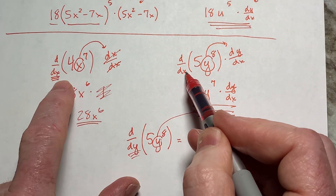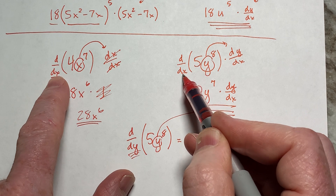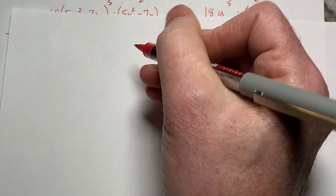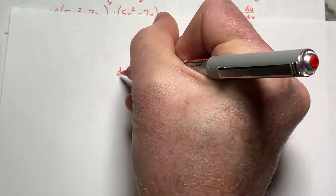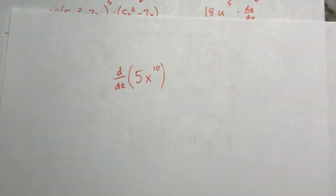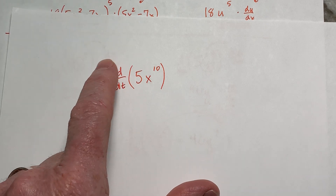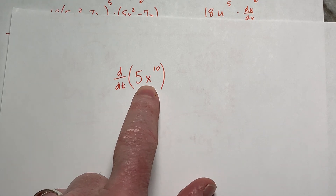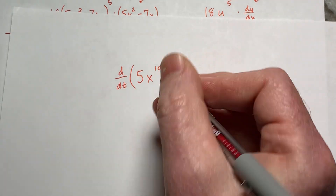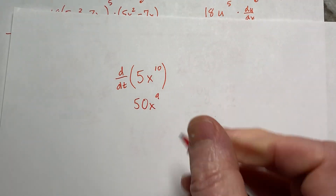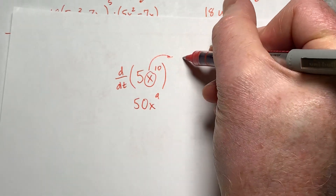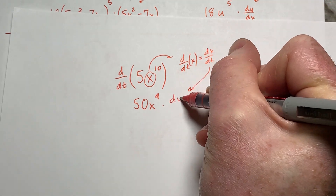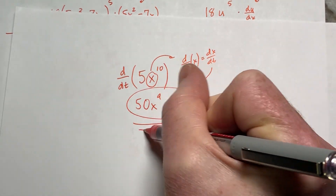It all depends on what your DD variable is — whether it's X, Y, T, or whatever. A lot of people get messed up on this. For instance, if you see 5X to the 10th and I say find the derivative with respect to time, I mean DDT, not DDX. You'd still write 50X to the 9th like always, but then you'd go back and the derivative of X when you DDT it is DX/DT, which has to go out to the side. That's implicit differentiation — it all depends on what you're differentiating with respect to.